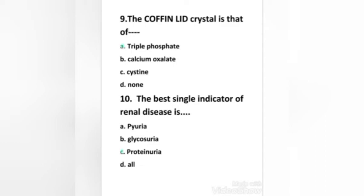The best single indicator of renal disease is: pyuria, glycosuria, proteinuria, or all. Right answer is option C — the best single indicator of renal disease is proteinuria. The presence of protein in urine indicates renal disease.